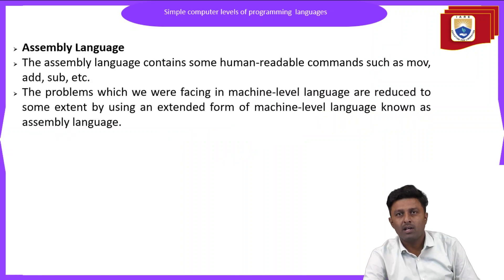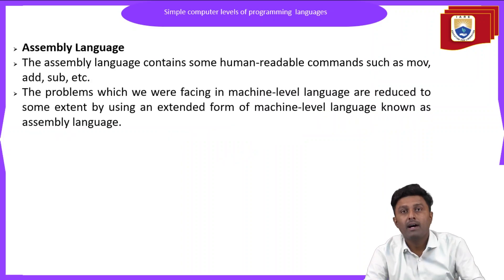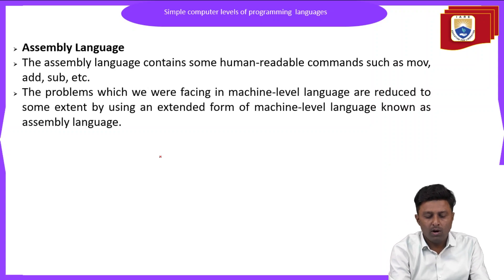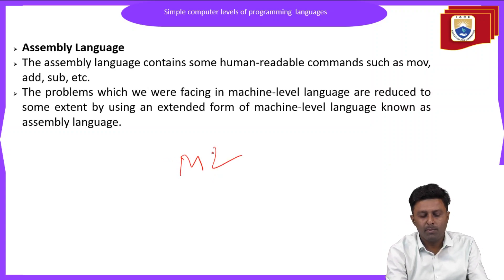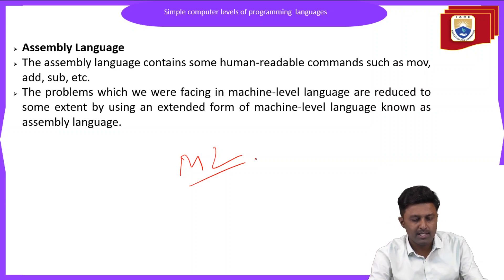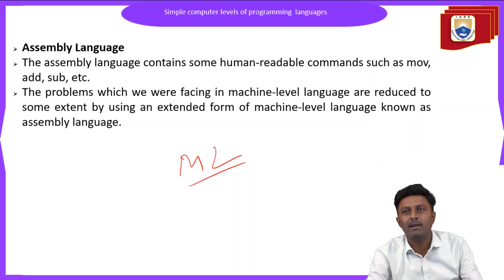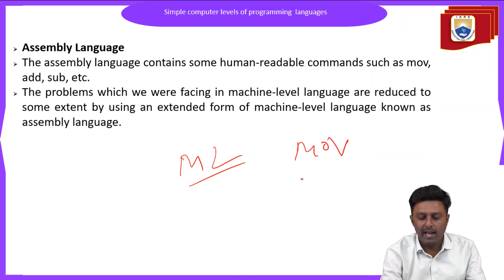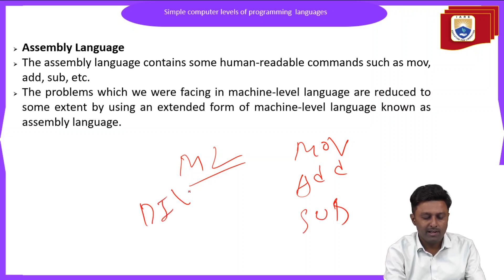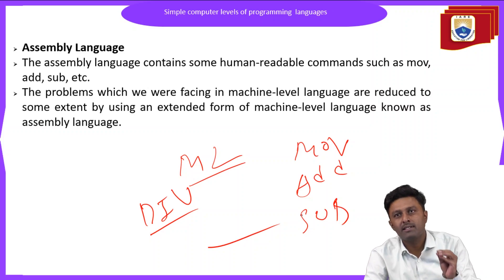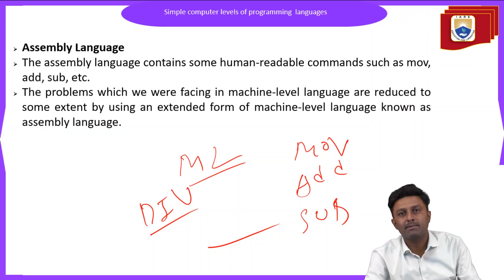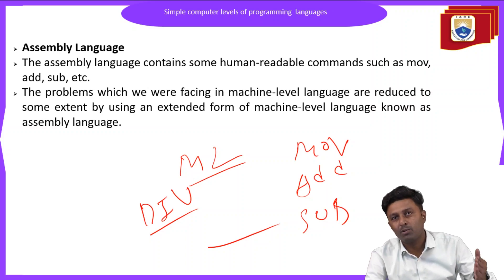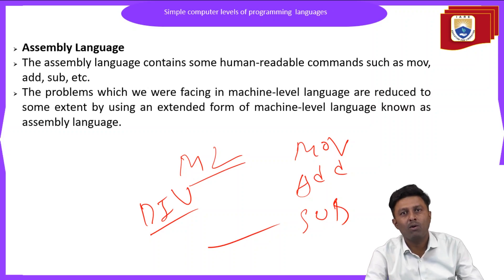To improve upon machine level language, the next level in the hierarchy is assembly language, where all the disadvantages of machine level language are overcome. Assembly language contains some human readable commands such as move, add, subtract, and division. Assembly language instructions use human readable commands like add and subtract, and the problems faced in machine language are overcome here. Such a language is called assembly language.